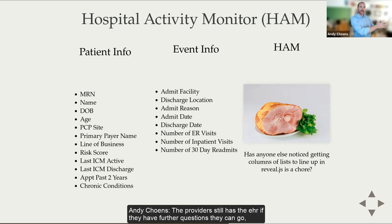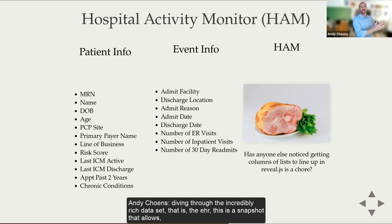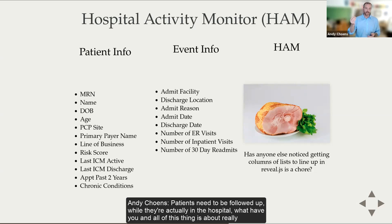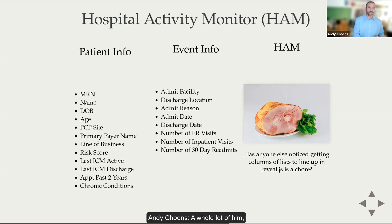The provider still has the EHR if they have further questions. This is a snapshot that allows the provider, a nurse, or a care manager to make rapid decisions about which patients need to be prioritized for follow-up on that transition of care, which patients need to be followed up while actually in the hospital. All of this is about providing patient connectivity between the ambulatory primary care provider and the patient when they're going in and out of the hospital.